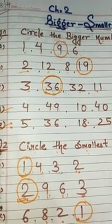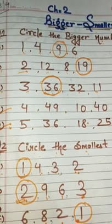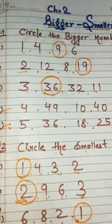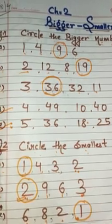Number 3: 3, 36, 32, 11. Which one is bigger? 36. Then circle it. In this way you have to do D number and E number.